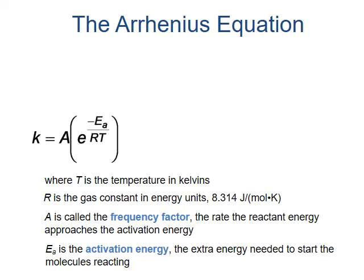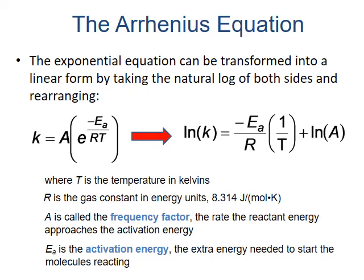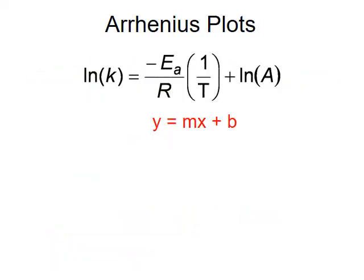We can get rid of the exponent and make the equation easier to work with if we take the natural log of both sides. The natural log of the rate constant is equal to the negative of the activation energy divided by the ideal gas constant, times the inverse of temperature, plus the natural log of the frequency factor. This rearranged form of the Arrhenius equation fits a straight-line equation relationship, y equals mx plus b.